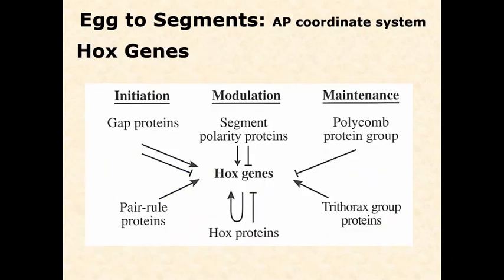The Hox genes are really central to this because they form an interesting transition point where we move from general patterning of repeated units — first very general anterior to posterior, then segmentation, then the polarity of segments — and finally at the Hox gene level we really see segments becoming different from one another. The level of Hox genes turned on by all these upstream genes then targets downstream genes that say: you are going to be a thorax, so let's turn on all the genes and start building legs on the thorax. If we're in the mesothorax, in winged insects, we're going to grow wings. So there's a signal somewhere in all that complexity that targets the first initial gene that says, build a wing right here.